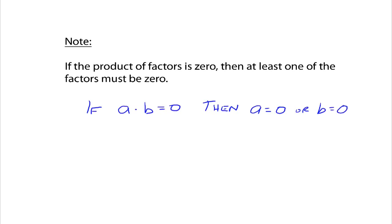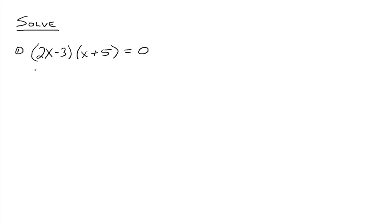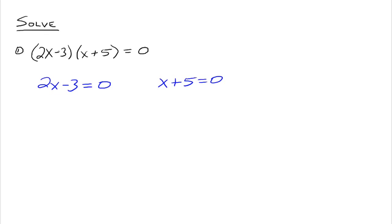For example, let's look at this first one. We have the equation (2x - 3)(x + 5) = 0. The left-hand side already has factors: 2x - 3 and x + 5. The product of 2x - 3 and x + 5 is supposed to equal zero, so the only way that can be true is if each one of these factors is equal to zero. We take each factor and set each factor equal to zero.